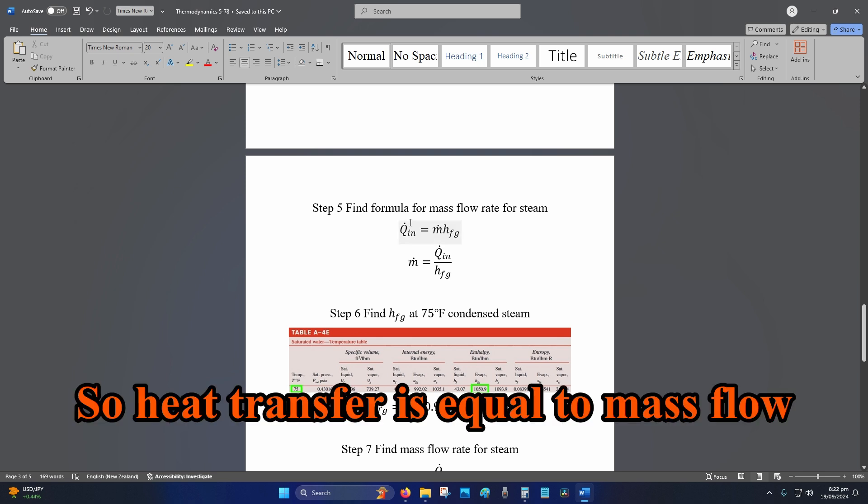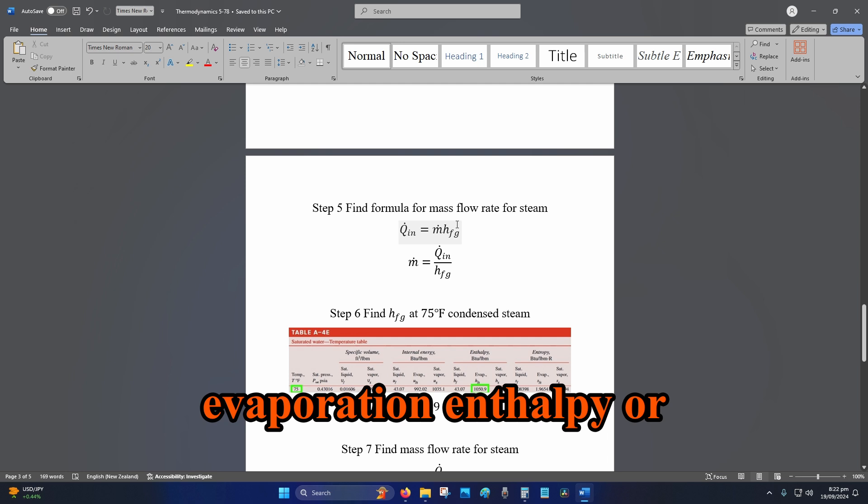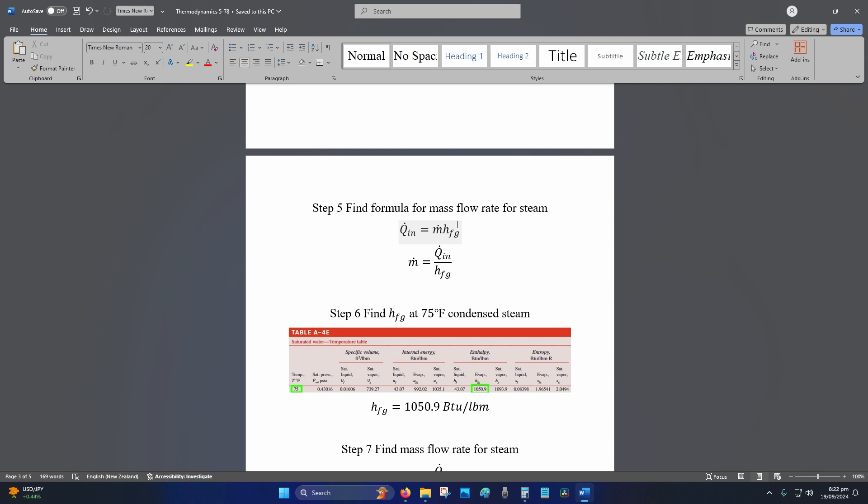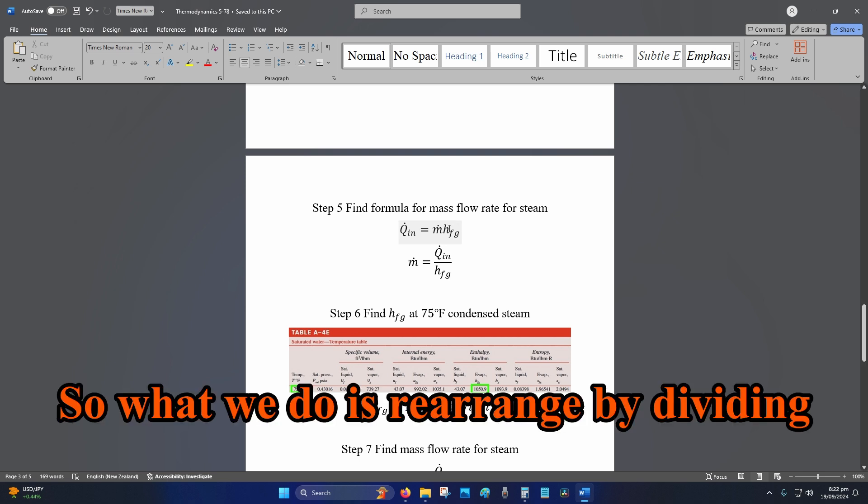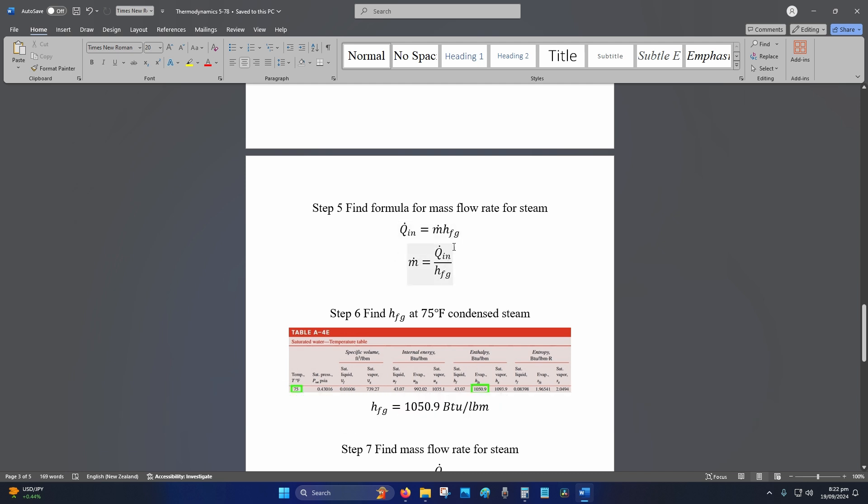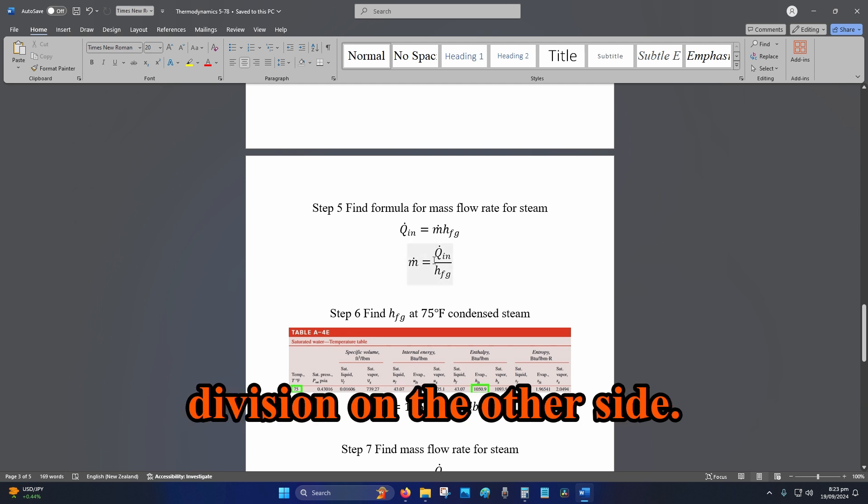So heat transfer is equal to mass flow rate multiplied by the evaporation enthalpy, or the enthalpy of fluid and gas. So what we do is rearrange by dividing the enthalpy to the other side. Now we'll cancel that side out and it becomes a division on the other side.